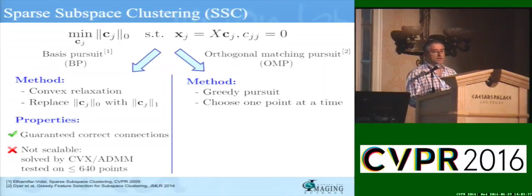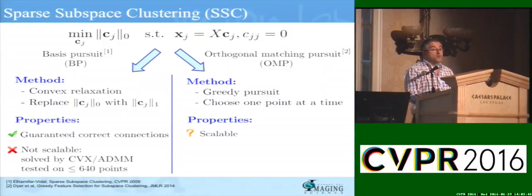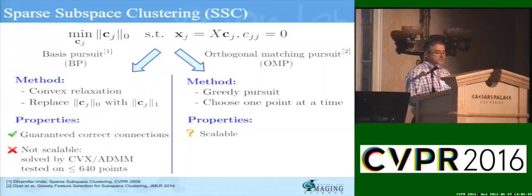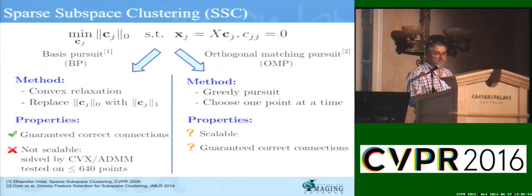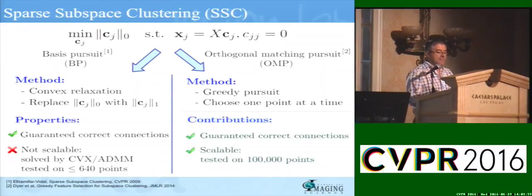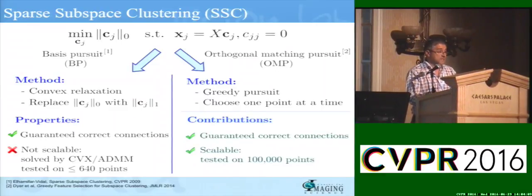By the fact that the number of points selected is very small in principle, this is supposed to be scalable. However, to our surprise, it was only two years ago that for the first time someone tried to use OMP for subspace clustering. The question is whether we can extend the nice existing theory for L1 to the case of OMP for subspace clustering. Those are exactly the two key contributions of this work: having theorems for correctness, as well as scaling the OMP algorithm to 100,000 data points — and in the next talk you will see even half a million.